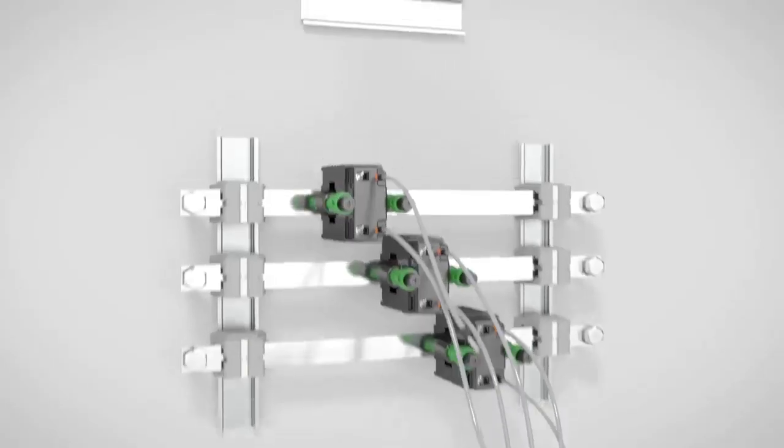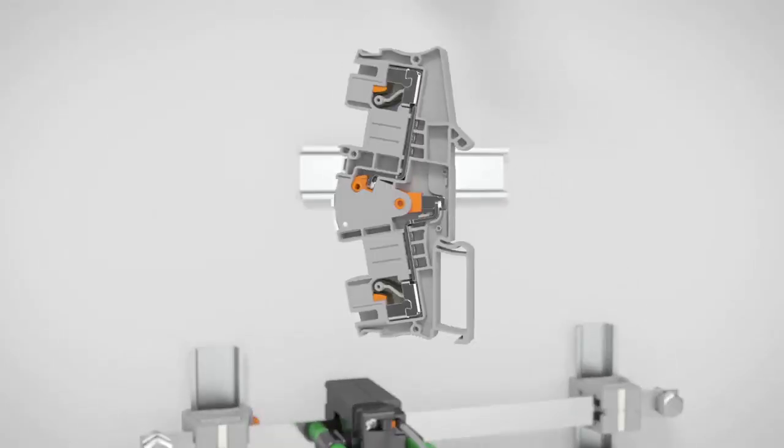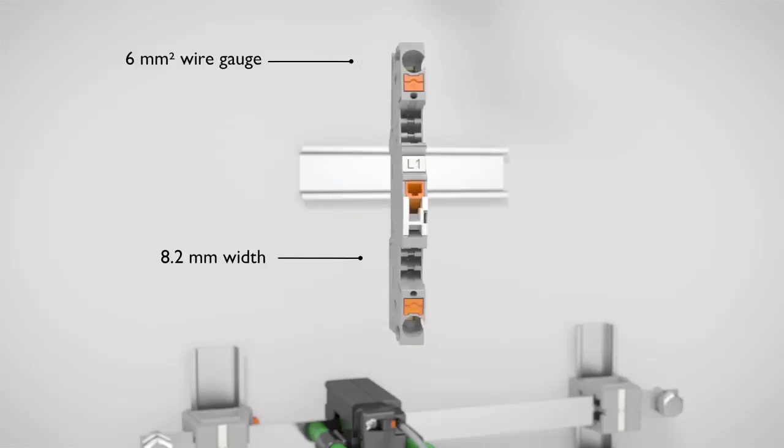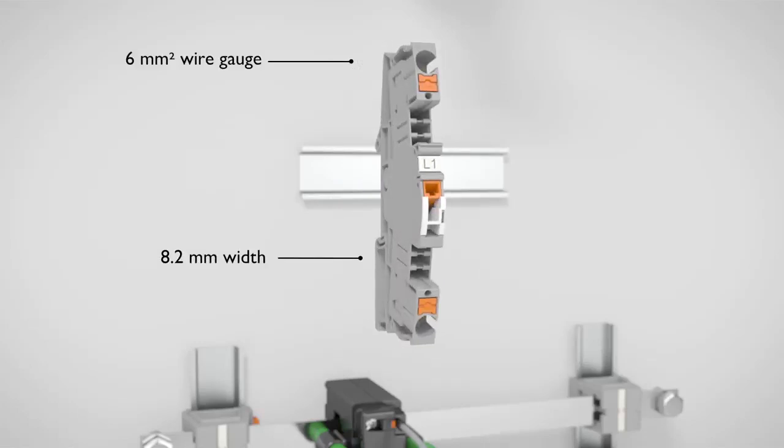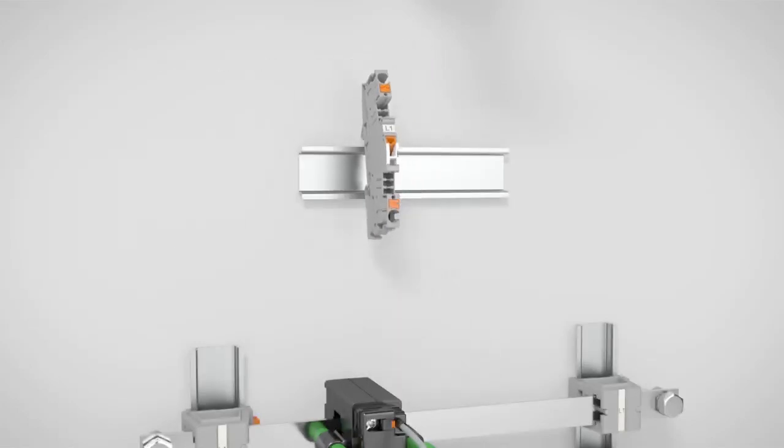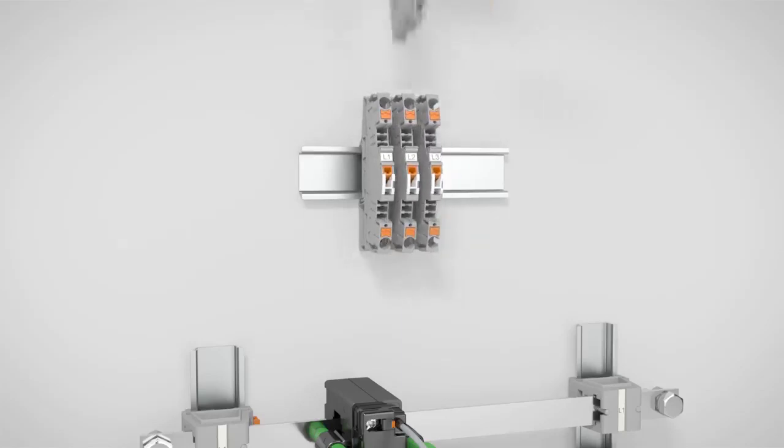Here's a solution that helps save space when you're setting up a measuring transducer terminal strip. The disconnect terminal blocks for conductor cross sections up to 6 millimeters squared are just 8.2 millimeters wide.